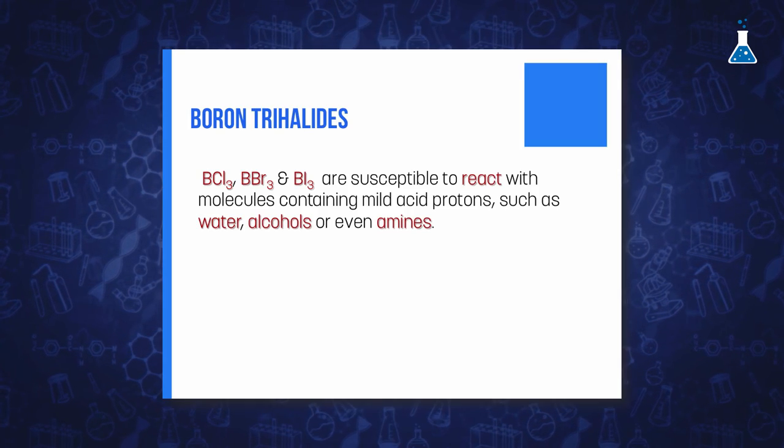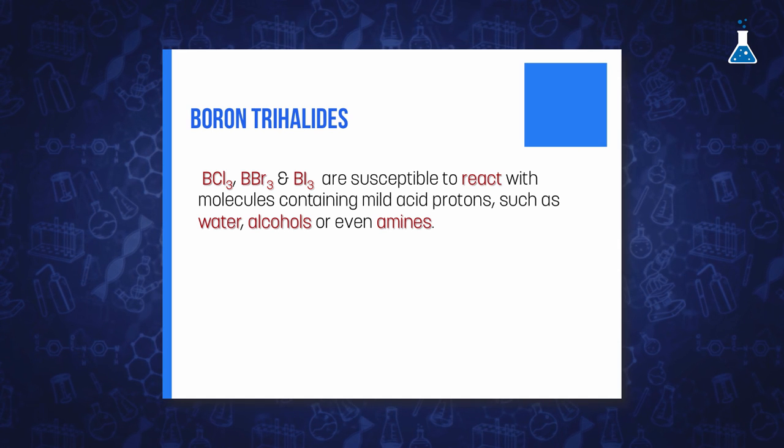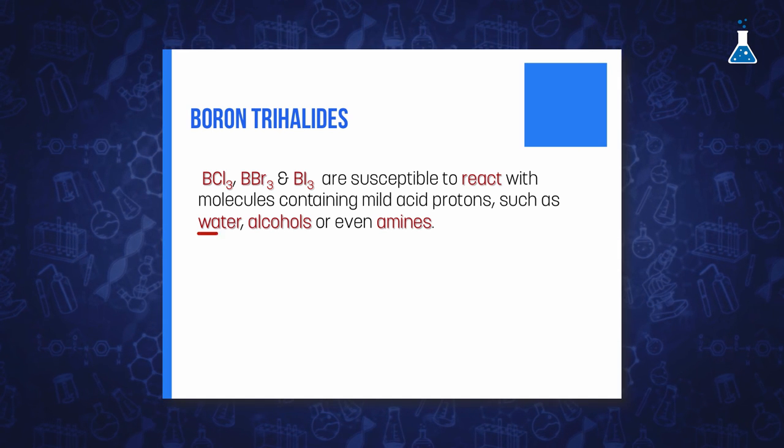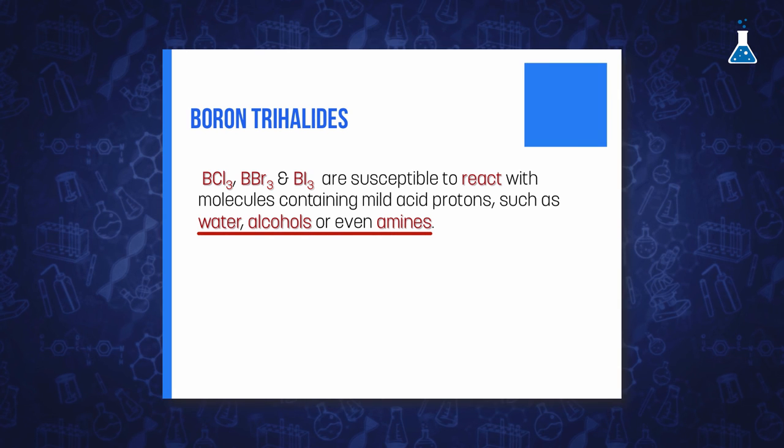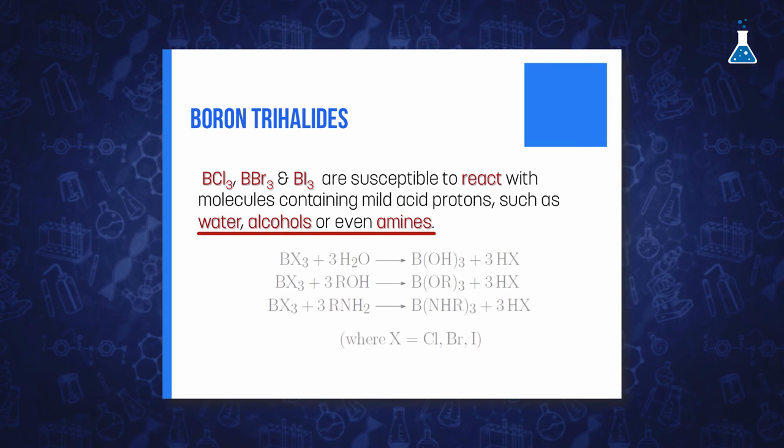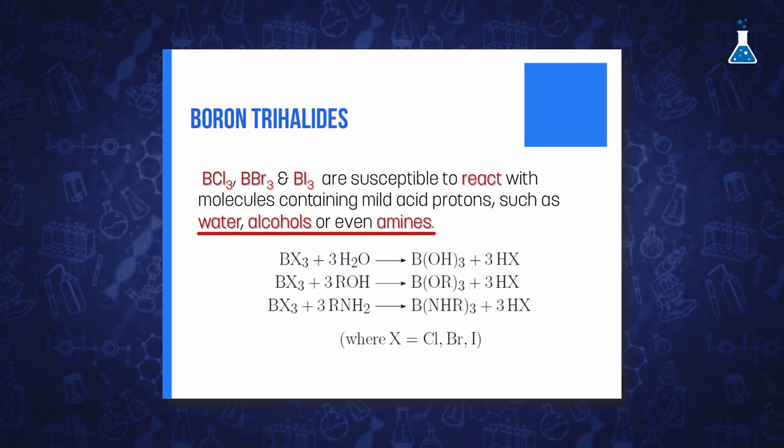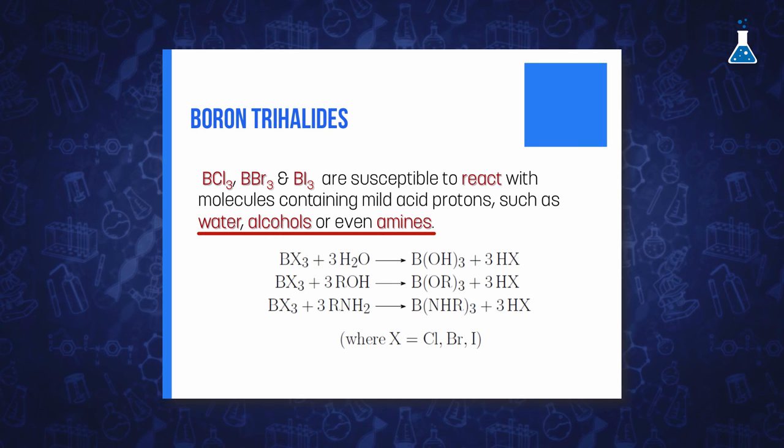Therefore, the strongest Lewis acid is boron tribromide, followed by boron trichloride, and finally boron trifluoride. For ligands containing mildly acidic protons such as water, alcohols, or even amines, the chloride, bromide, and iodide species are susceptible to protolysis, being even explosive for boron tribromide and boron triiodide.